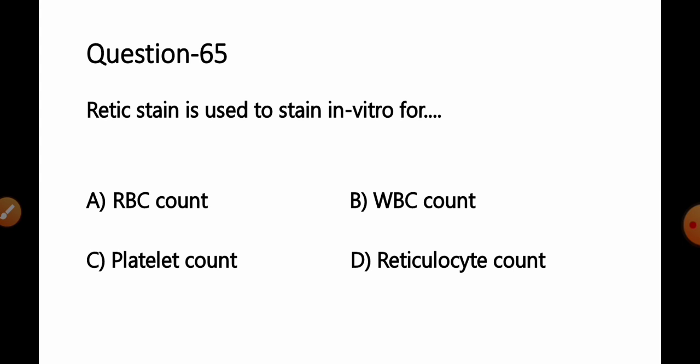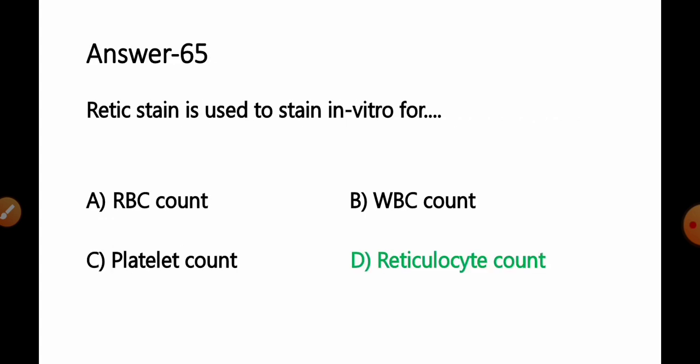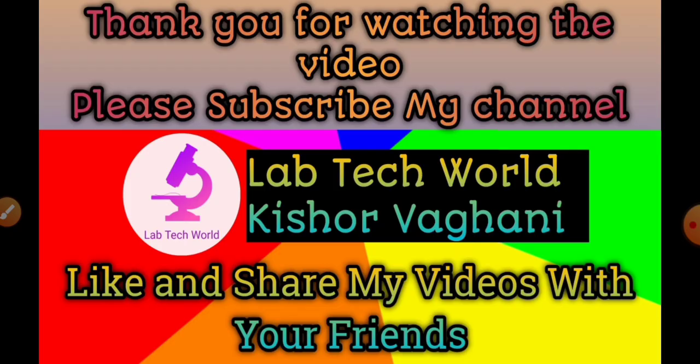Question number 65: Retic stain is used to stain in vitro for — option A: RBC count, B: WBC count, C: platelet count, D: reticulocyte count. A supra-vital stain (retic stain) such as new methylene blue or brilliant cresyl blue is used to stain reticulocytes for an actual count. Note: reticulin stain is a different stain used in liver histopathology to visualize reticular fibers. So option D, reticulocyte count, is the correct answer.